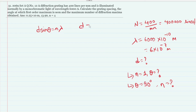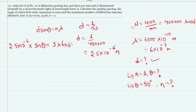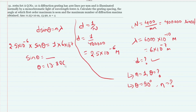d = 1/N = 1/(400 × 10³) = 2.5 × 10⁻⁶ meters. Using d sin θ = n λ, for n = 1: sin θ = λ/d = 6×10⁻⁷ / 2.5×10⁻⁶. So θ₁ = sin⁻¹(0.24) ≈ 13.88 degrees. We then find the maximum number of diffraction maxima by setting θ = 90°.